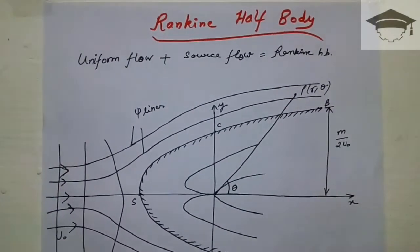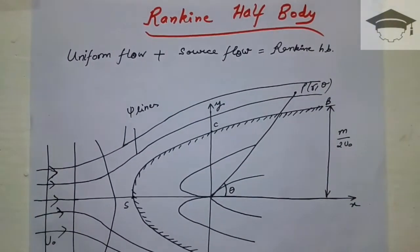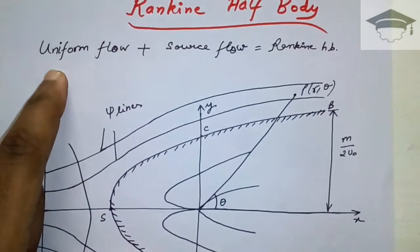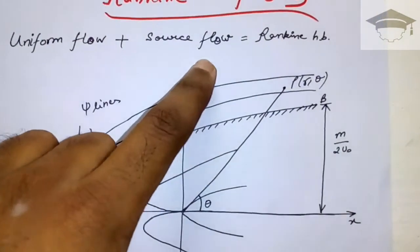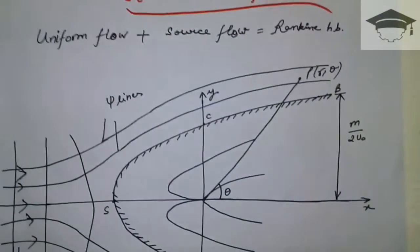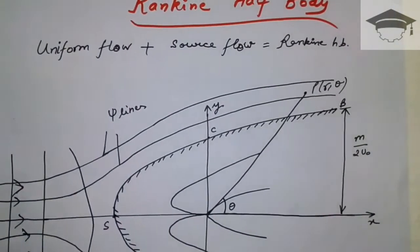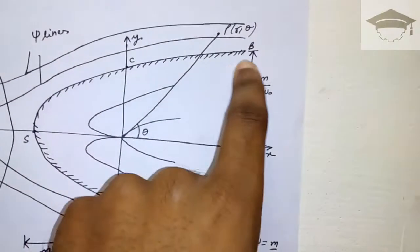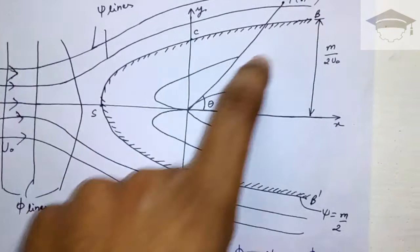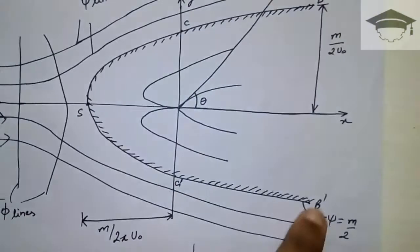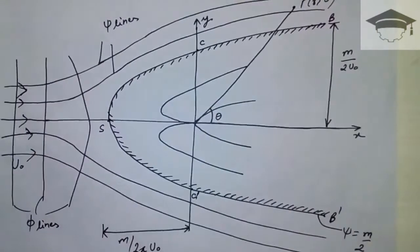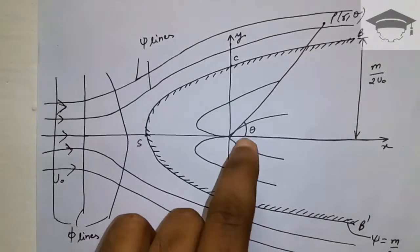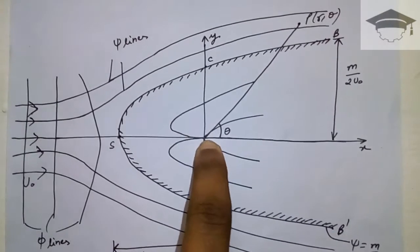Rankine Half Body is formed when there is uniform flow plus source flow. The combination of uniform flow and source flow forms the Rankine Half Body. This is the Rankine Half Body — the dashed outline B-C-S-C'-B'. These are the stream lines for the uniform flow, and this is the source flow.